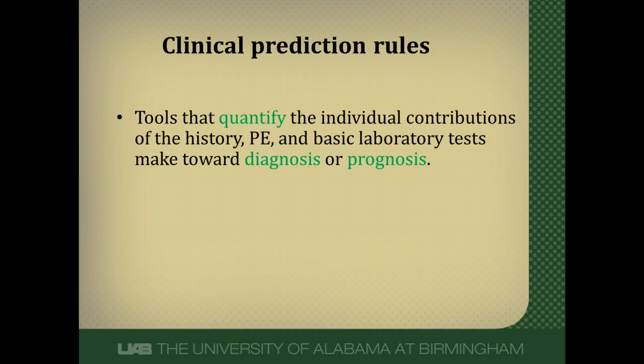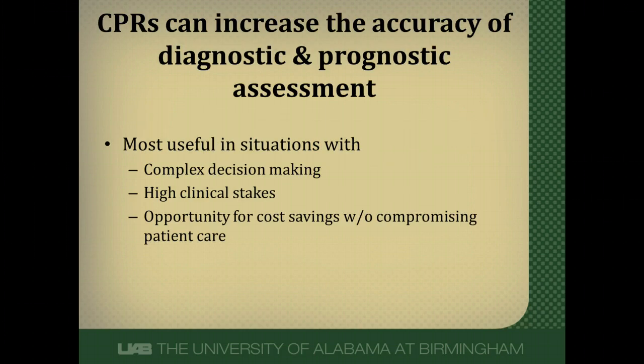Clinical prediction rules are tools that quantify the individual contributions of elements of the history and physical examination and basic laboratory tests toward either making a diagnosis or a prognosis. It isn't all the elements in the history of a given disease — it's very selective ones that are predictive of either a diagnosis or a prognosis.